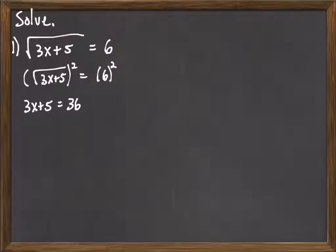I'll ask you to take a moment and solve that equation. And so to solve this, we'd subtract 5 from both sides, get 3x equals 31, and then divide both sides by 3, we get x equals 31 thirds.